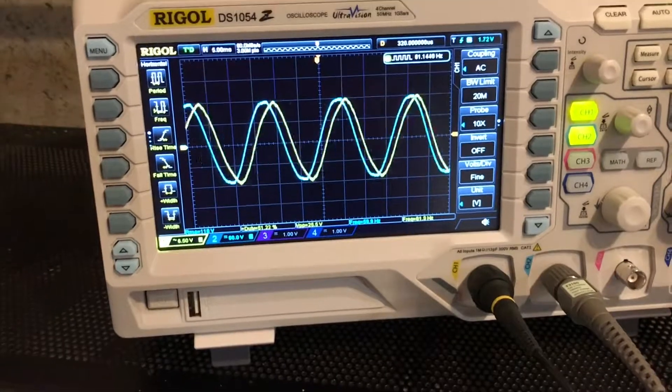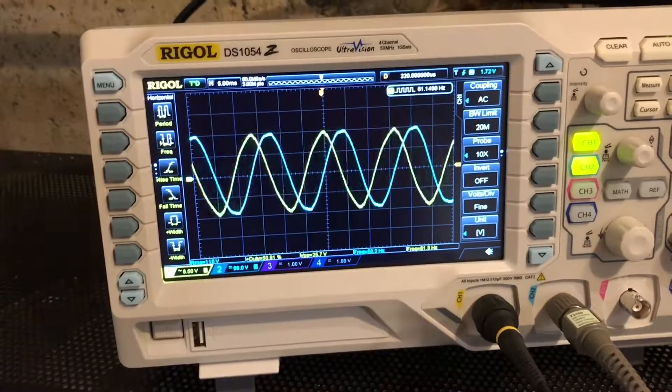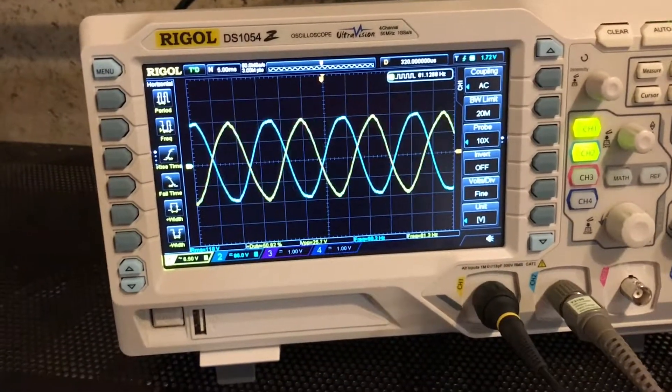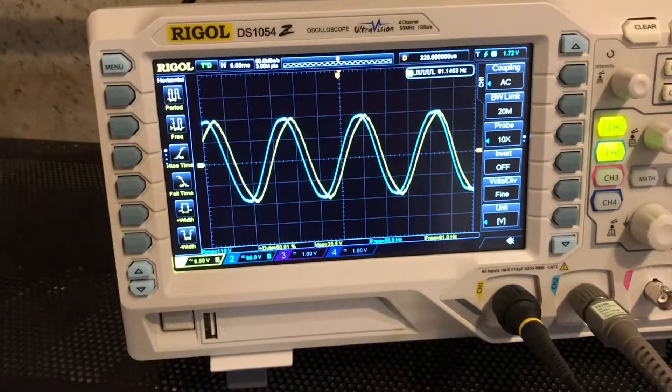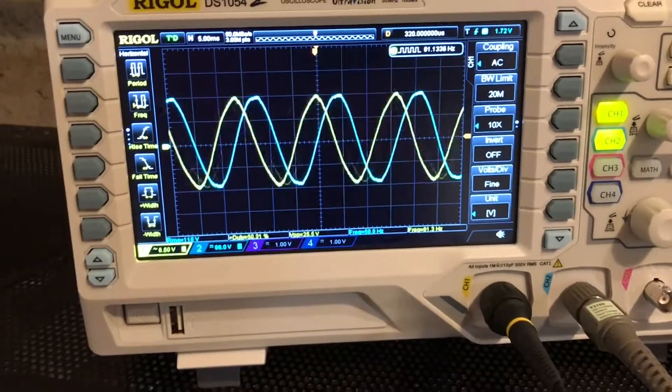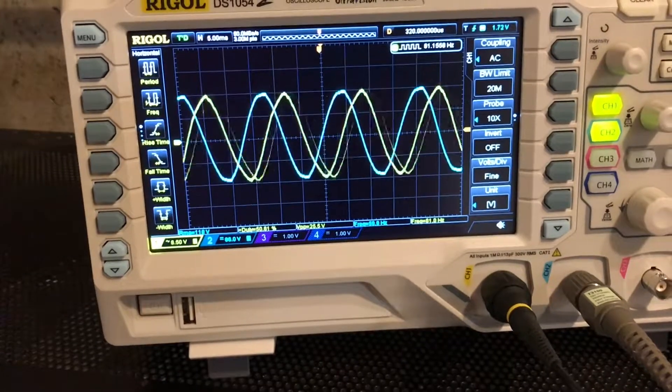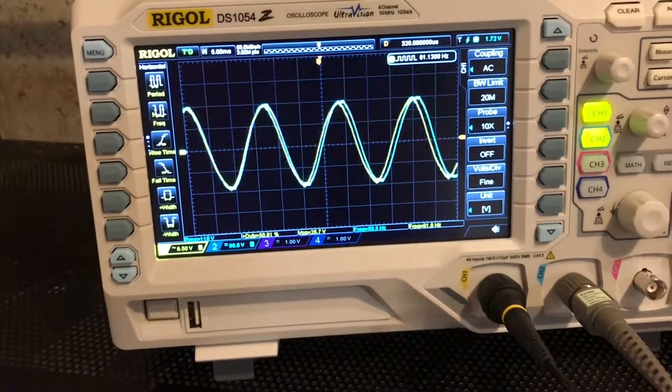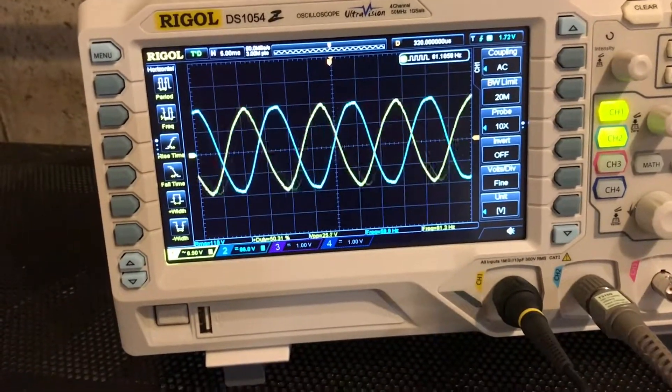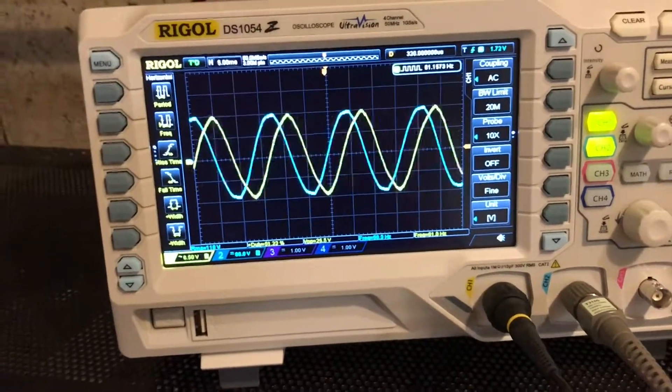As you can see, it's out of phase most of the time. The utility power, the grid power, is going to attempt to immediately pull that generator into phase, which is going to cause all sorts of catastrophic damage.